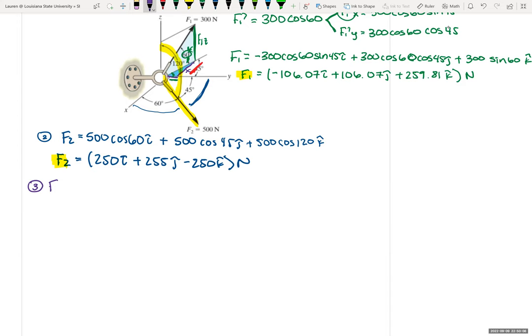So now that we have our F1 and our F2, we can now find the resultant force. We know that FR is just equal to F1 plus F2. So FR is equal to negative 106.07 plus 250 I plus 106.07 plus 255 J plus 259.81 minus 250 K.